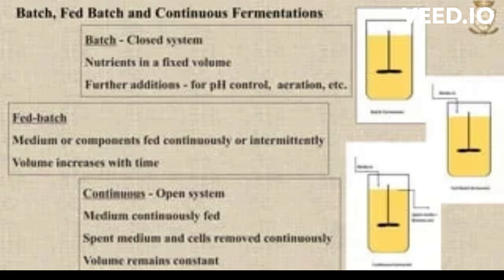The choice of culture type will depend on the specific requirements of the project, such as the desired productivity, cell density, and ease of operation. It's also worth noting that mathematical models can be developed to describe and predict the growth of cells in batch, continuous, and fed-batch cultures. These models can be used to optimize culture conditions and predict cell behavior under different conditions.